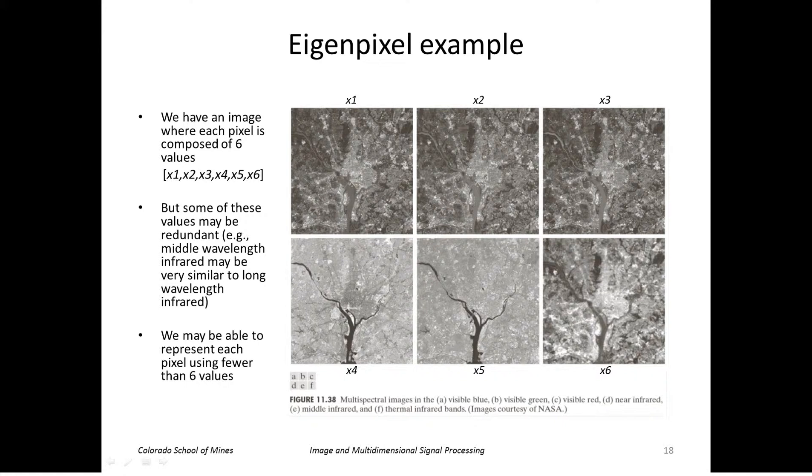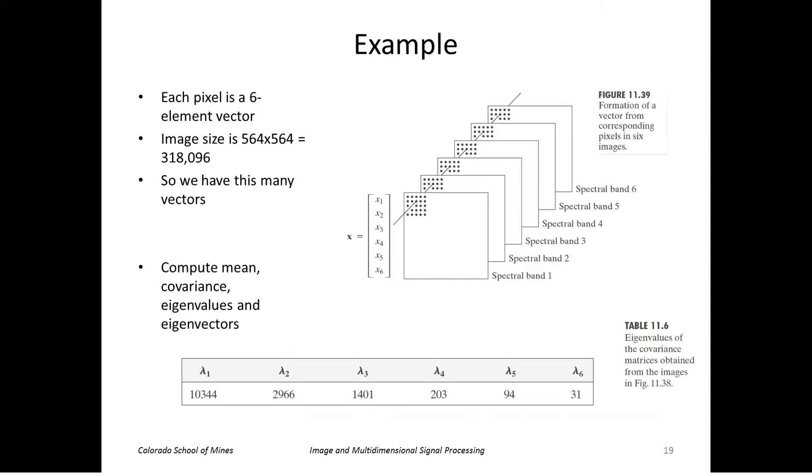You can kind of see why that would be possible. For example, the near infrared and middle infrared look very similar, so a pixel here pretty much has the same value as the corresponding pixel here. So the idea is that we might not need all of these bands to represent our image.